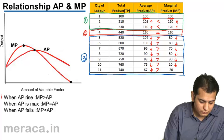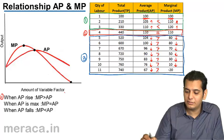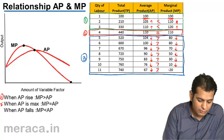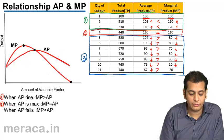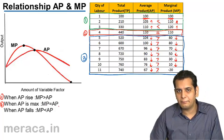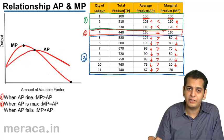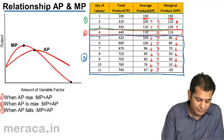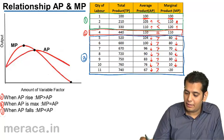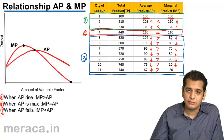First, when AP rises, MP is greater than AP, which is denoted by the first stage. Second, when AP is maximum, MP equals to AP. You can see that AP is maximum when AP and MP are equal. And finally, when AP falls, MP is less than AP or AP is greater than MP.